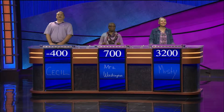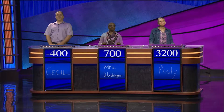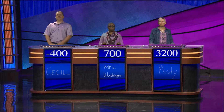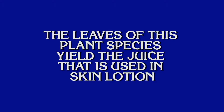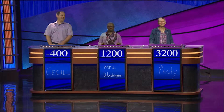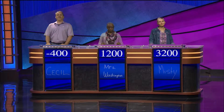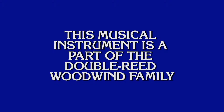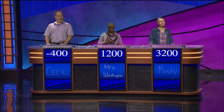Cecil, you have the board. Let's go O Before E for $500. The leaves of this plant species yield a juice that is used in skin lotions. What is aloe? Correct. O Before E for $400: This musical instrument is a part of the double reed woodland family. What is an oboe? Correct.